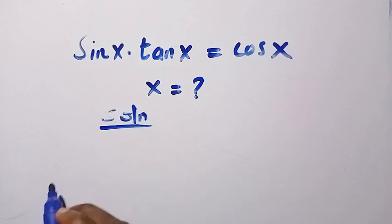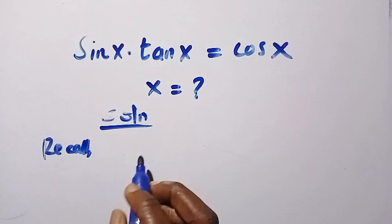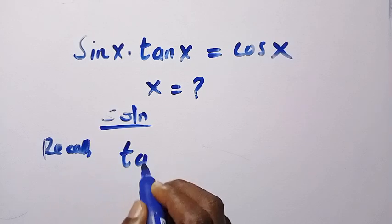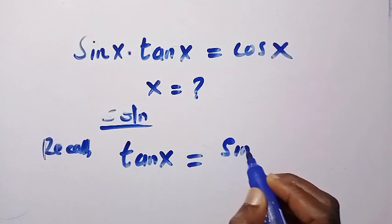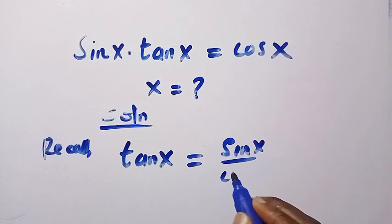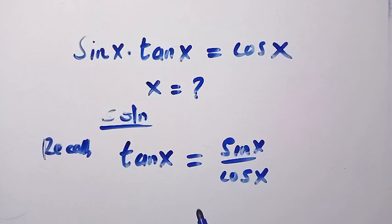The first thing we are going to do here is, suppose we recall that if we have tan x, this is given as sin x divided by cos x. This is an identity we should be familiar with.